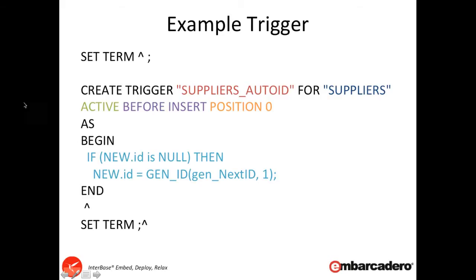To create a trigger we initially use the SET TERM statement to change the terminator from semicolon to something else — typically the caret sign. Then we use the CREATE GENERATOR keywords to create a generator. You pass the name you want to call the generator — in our example here it's suppliers_auto_ID. You then specify which table this trigger is for, for example the suppliers table. You then set whether it's going to be active or inactive, and then set the position — whether it runs before or after insert, update or delete. There's also an optional priority order; the position goes from zero upward, and that defines the order when you have multiple triggers against the same table.